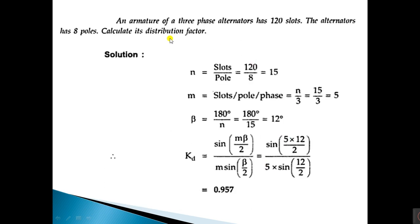A problem based on the distribution factor: An armature of a 3-phase alternator has 120 slots and 8 poles. Calculate the distribution factor. n = 120/8 = 15 slots per pole. m = n/3 = 15/3 = 5 slots per pole per phase. Beta = 180/15 = 12 degrees. Applying in the formula: sin(5×12/2) / (5×sin(12/2)) gives a distribution factor of 0.957.